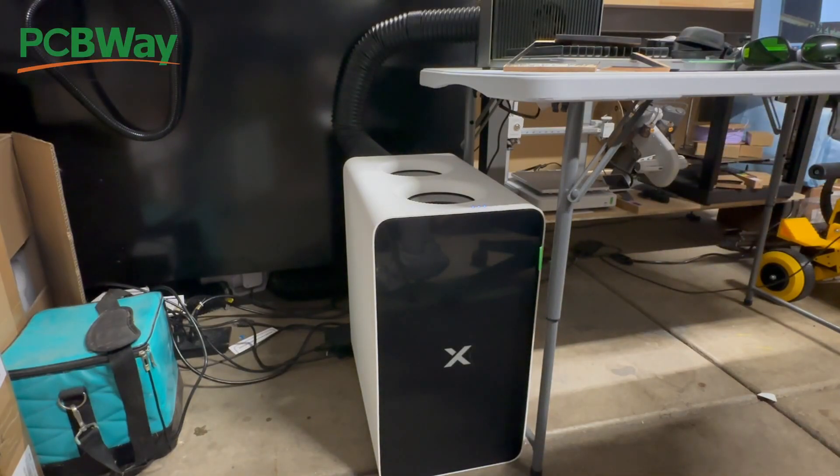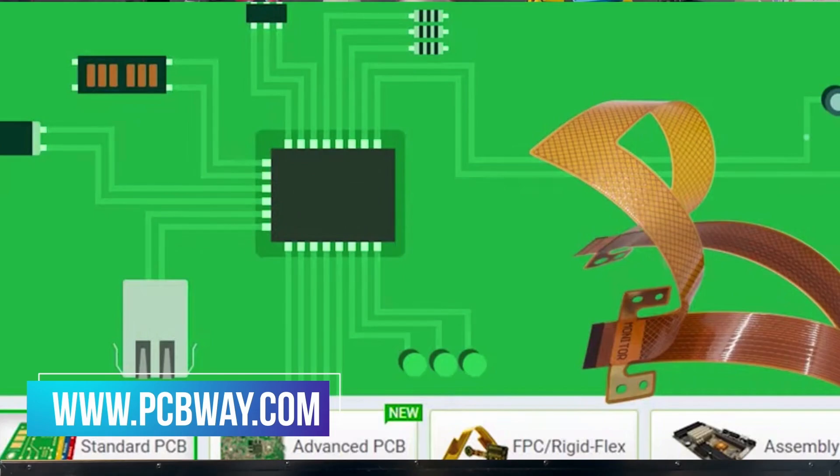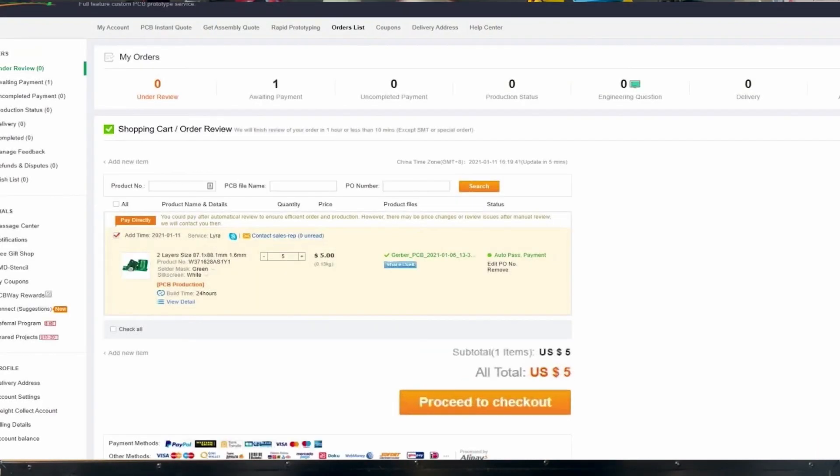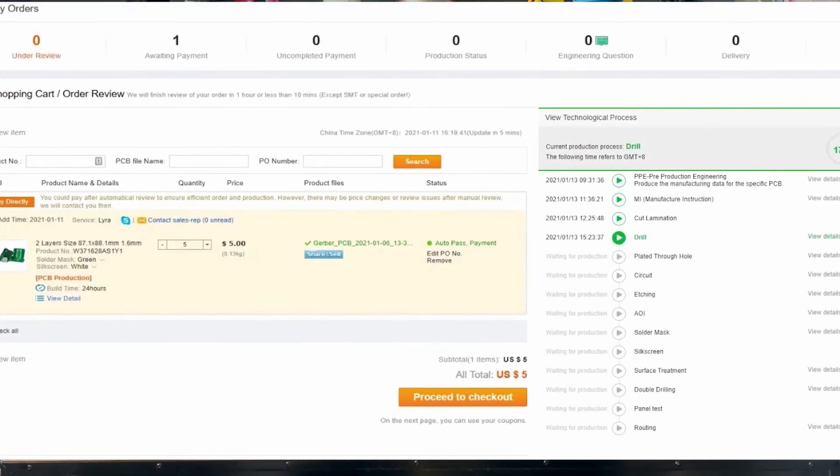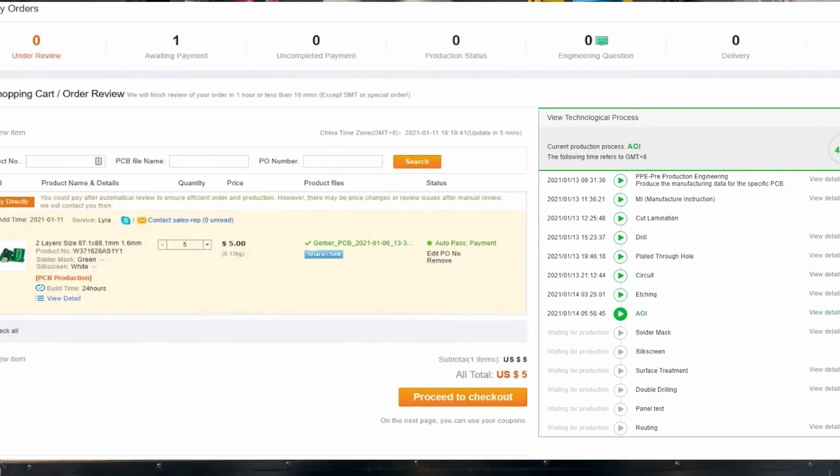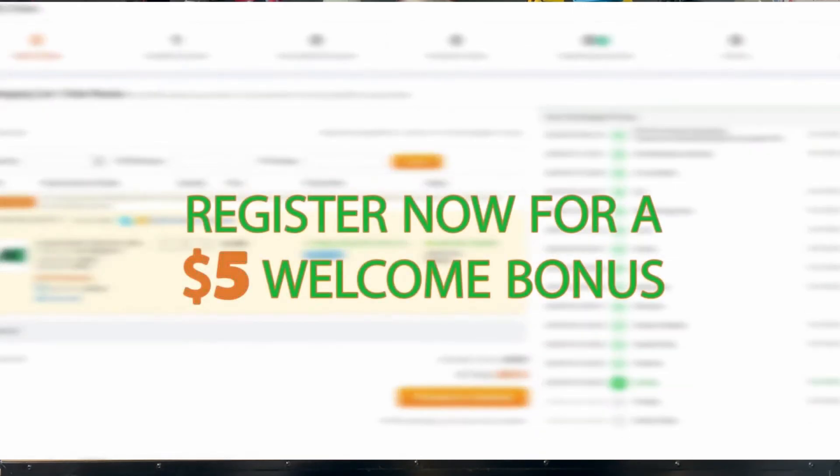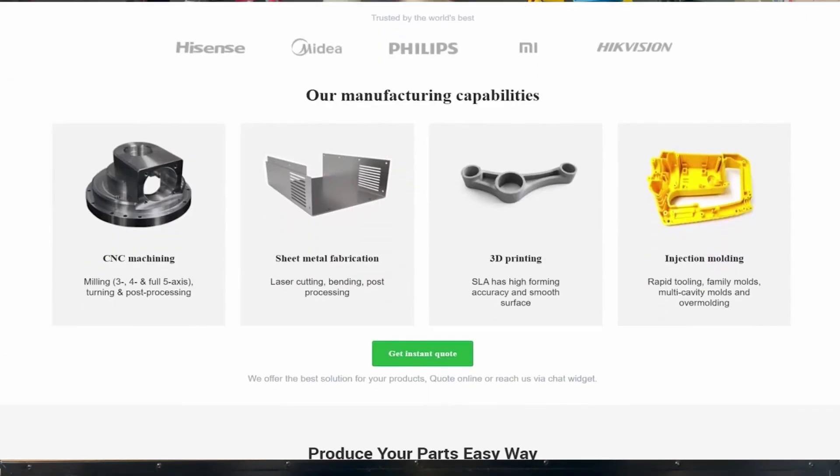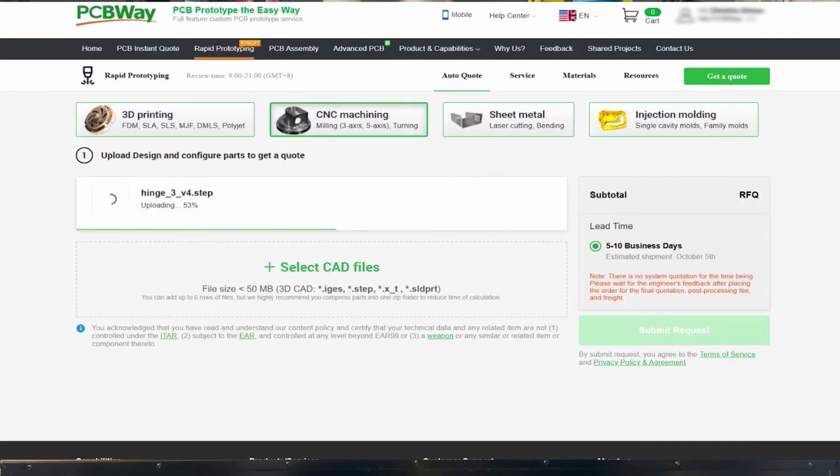And that leads us to today's video sponsor, PCBWay. Are you looking for a PCB manufacturer? Are you looking for rigid, flexible PCBs? Are you looking for them to assemble them for you? Well, they can. And they also offer other services such as 3D printing, injection molding, and CNC. Heck, they even have a community section where you could buy a project and assemble it on your own. If you're looking for any of these services, please reach out to PCBWay.